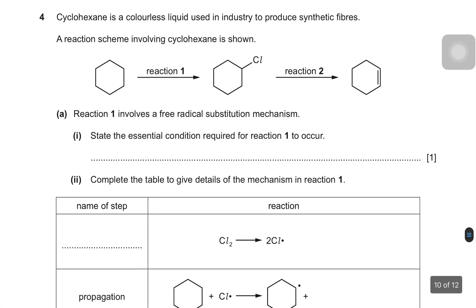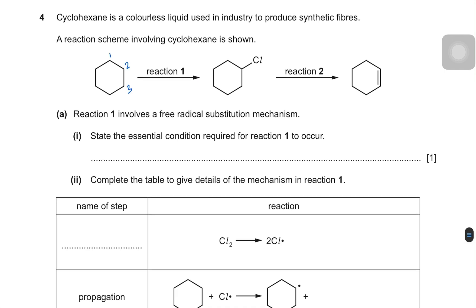This question says cyclohexane is a colorless liquid used in industry to produce synthetic fibers, and a reaction scheme involving cyclohexane is shown. You can see the hexagon — it has six carbons, so let's number them carbon one through six. This is the skeletal formula for cyclohexane. Chlorine is attached here, so we renumber so the carbon attached to chlorine gets number one.